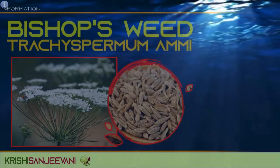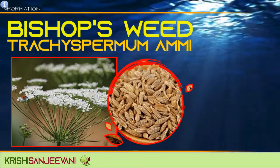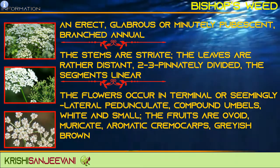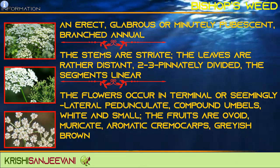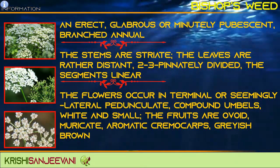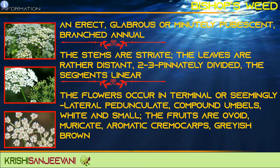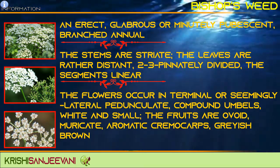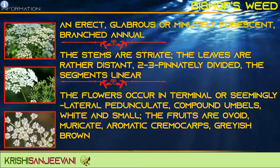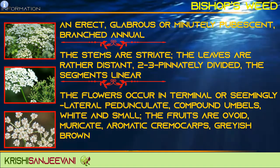Bishop's Weed, Trachyspermum ammi, is an erect, glabrous or minutely pubescent branched annual. The stems are striate, the leaves are rather distant, 2 to 3 pinnately divided, with linear segments.